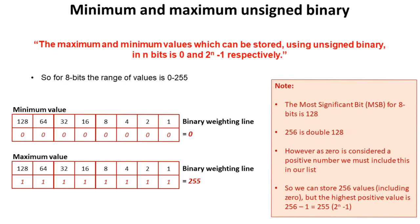However, you mustn't forget in binary that as 0 is considered a positive number, we must include this in our list. So we can store 256 values including 0, but the highest positive value is 256 minus 1, or 255.